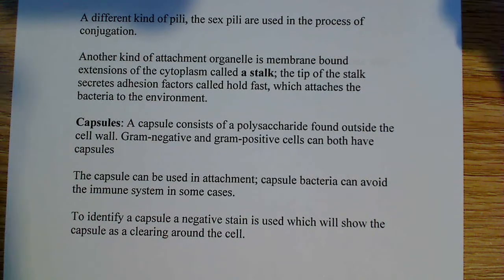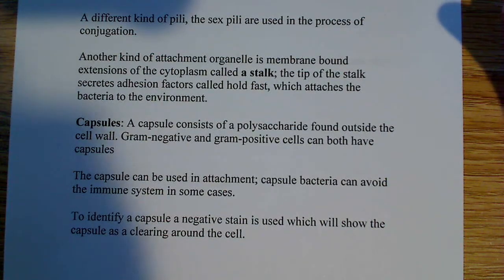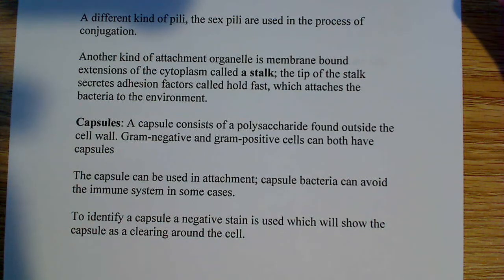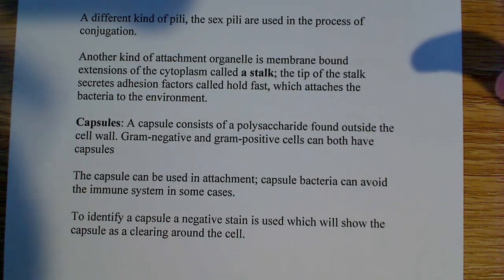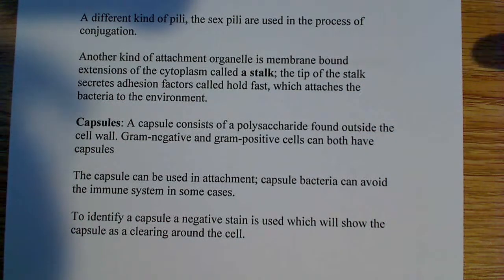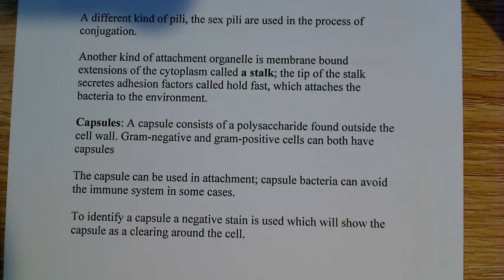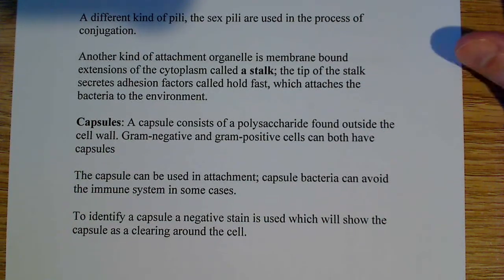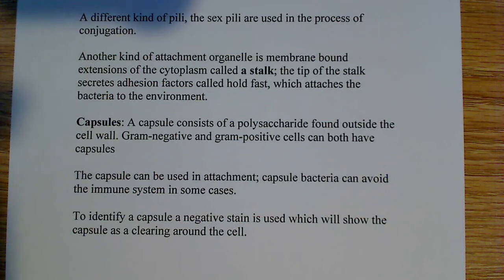If you want to identify the capsule in the lab — and you may very well have to do this — you want to use what's known as a negative stain. The negative stain stains the background and leaves a halo around the bacteria. If you see that halo or area of clearing, then you know that you have a capsule. If not, then you don't. That's how people discover whether or not their bacteria has a capsule.